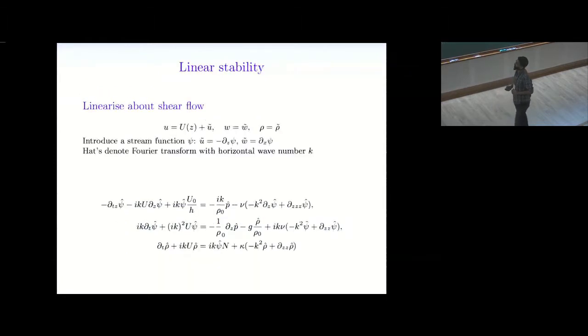We want to do linear stability analysis. So we will linearize about this steady state flow. Tilde variables are my perturbation variables. What I'm going to introduce is a stream function, so that u tilde and w tilde are given by these derivatives of the stream function. And then because the whole problem is now linearized and all coefficients are independent of x, I'll take a Fourier transform. So k represents the Fourier mode, and the resulting set of equations, rather complicated looking, but that's what you end up with.